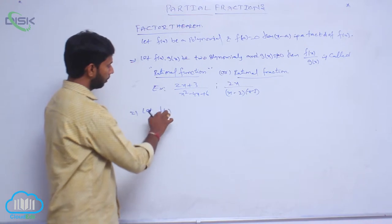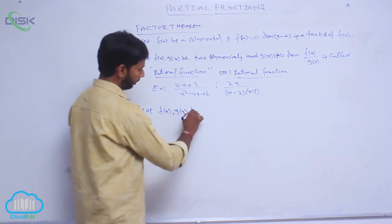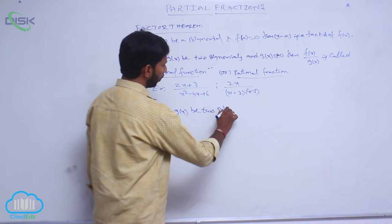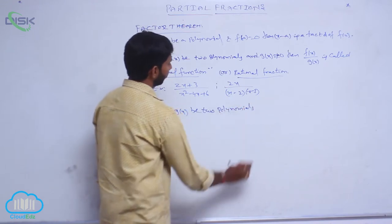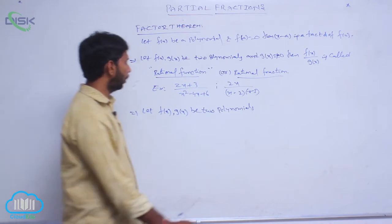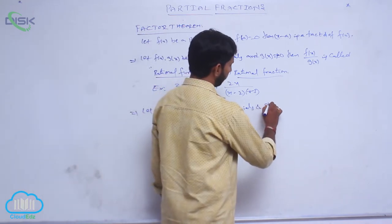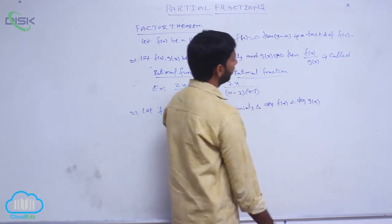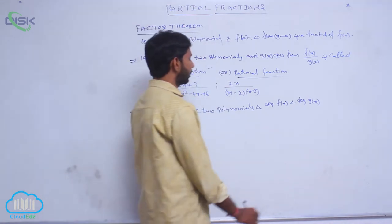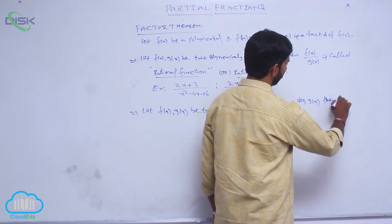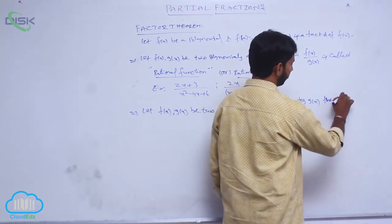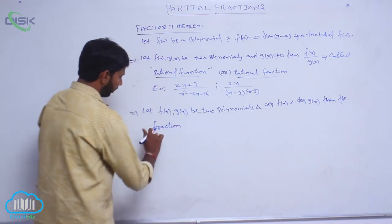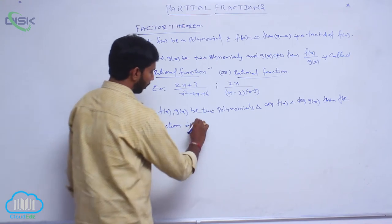Let f of x, g of x be two polynomials. If the degree of f of x is less than the degree of g of x, then the fraction is called a proper fraction.